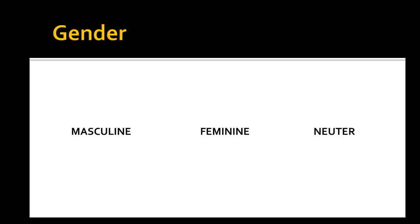In Russian there are three genders: masculine, feminine, and neuter. In this presentation we will talk only about masculine and feminine.